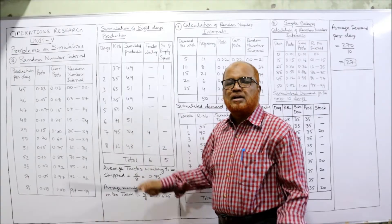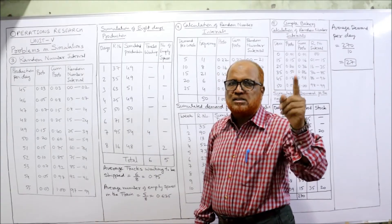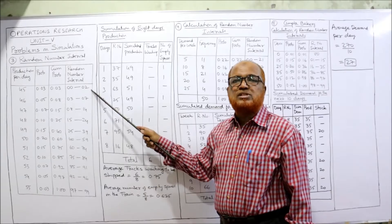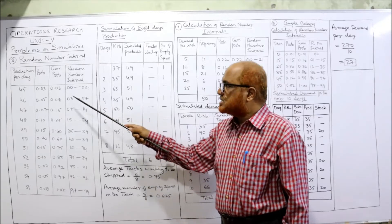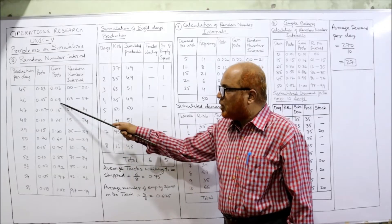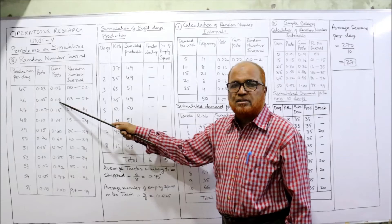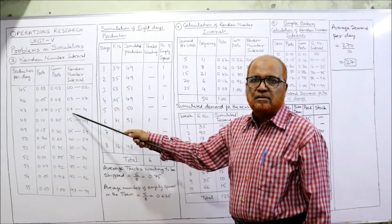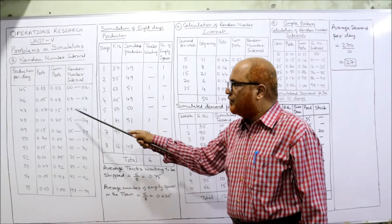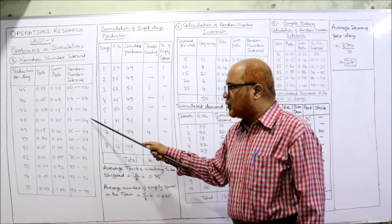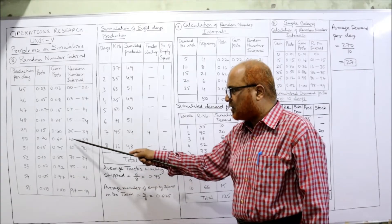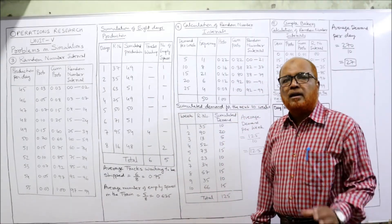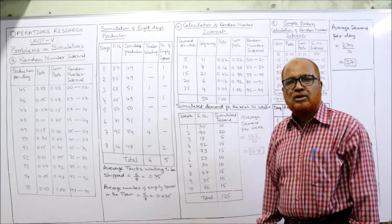The interval 00 to 02 contains three numbers. The next interval begins from 03. Since the next cumulative total is 0.08, one below is 07, so the interval is 03 to 07. The next starts from 08 and goes to 14. Then 15 to 24, 25 to 39, 40 to 59, 60 to 74, and so on. This gives us the complete random number interval table. Now we find the simulated production for 8 days.